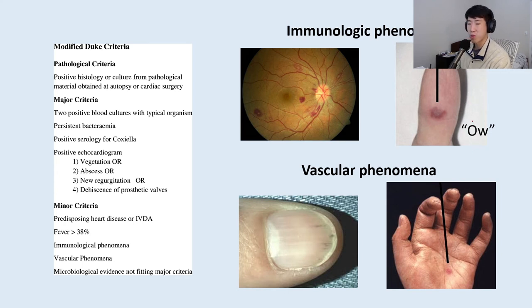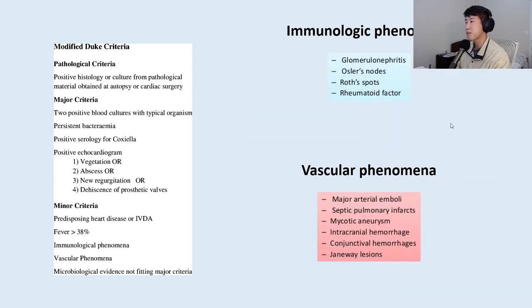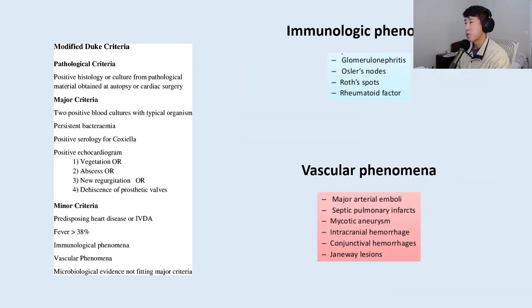You can remember that Osler's nodes hurt. Other immunologic phenomena include glomerulonephritis, Osler's nodes, Roth spots, and rheumatoid factor. Other vascular phenomena include emboli, pulmonary infarcts, hemorrhage, conjunctival hemorrhages, and Janeway lesions.